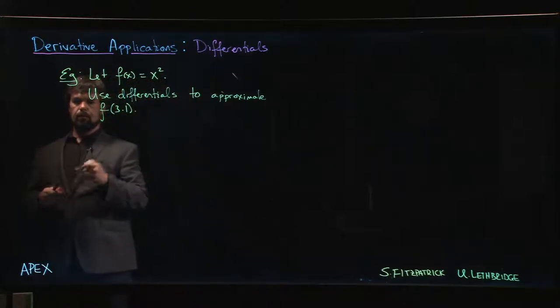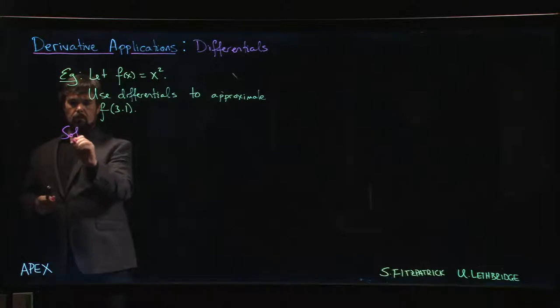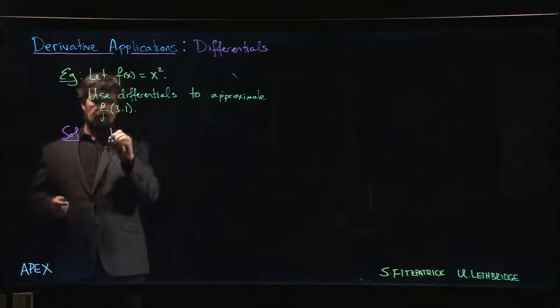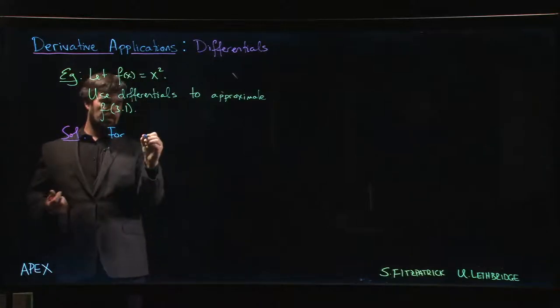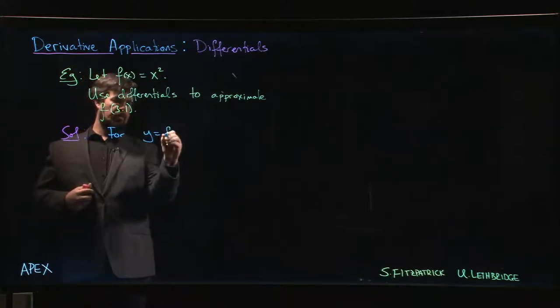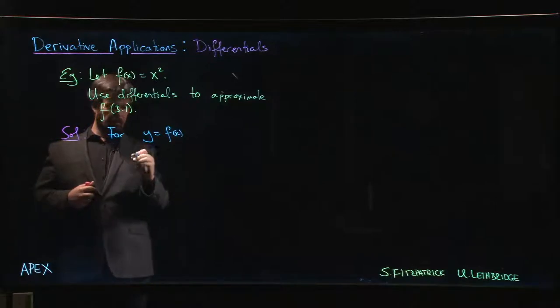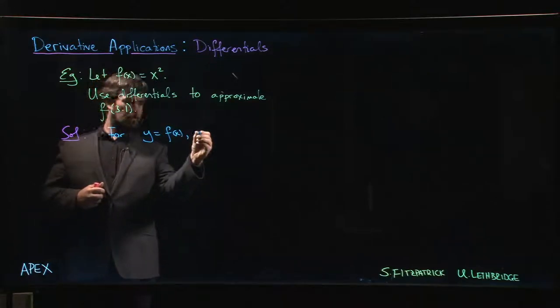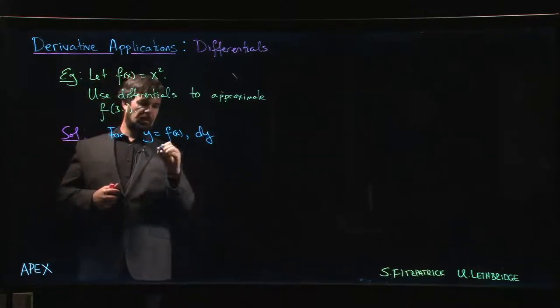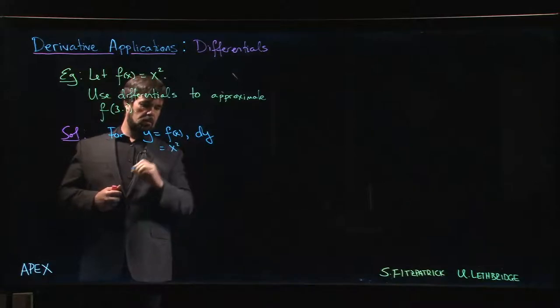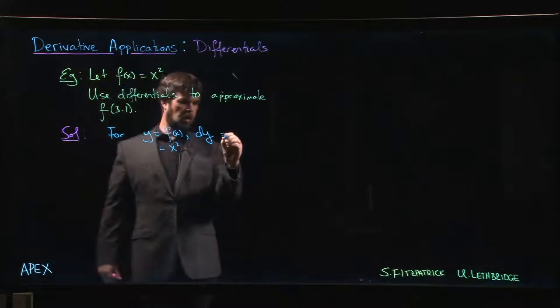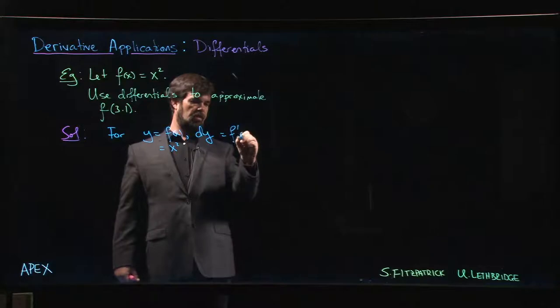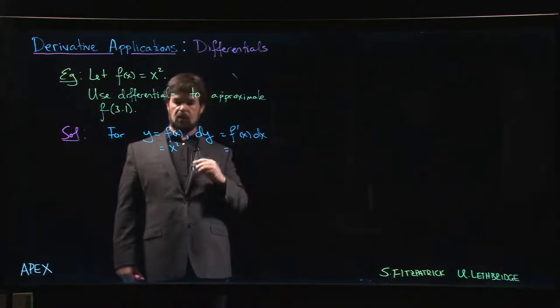Well, the first thing we do is compute the differential. For y equals f(x), which is x squared, we know that dy by definition is f'(x) times dx. And in this case, f' is just 2x.